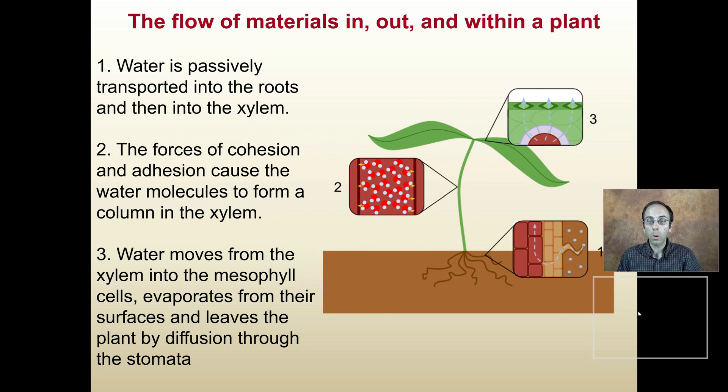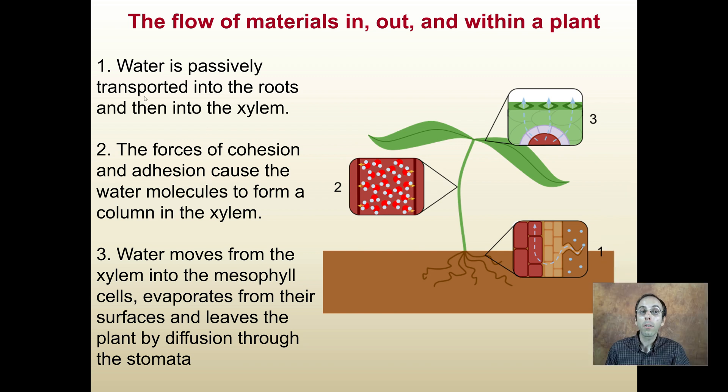The flow of minerals in and out and within the plant: water is passively transported into the roots and enters the xylem, as we can see at picture number one. In the stem region, the forces of cohesion and adhesion cause water molecules to form a column in the xylem. In number three, the water moves from the xylem to the mesophyll cells, evaporates from their surfaces, and leaves the plant by diffusion through the stomata as water vapor. This whole process keeps repeating. This is why you have to constantly water your houseplants because they're constantly going through this transpiration process.